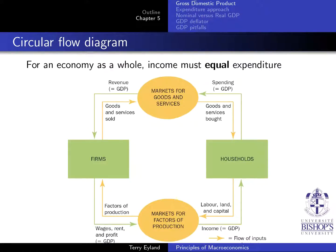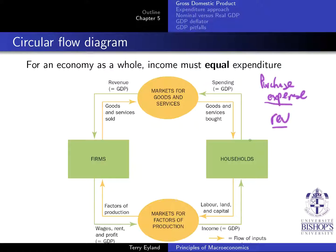We can see that the income and expenditure approaches are the same by looking at the circular flow diagram. The big idea is that every time you buy something or buy someone's services, that purchase — or expense — is someone else's revenue. So if we add up all the expense amounts or all the revenue amounts, it amounts to the same value in both cases. Therefore, it doesn't really matter whether you calculate GDP from an expenditure approach or an income approach.